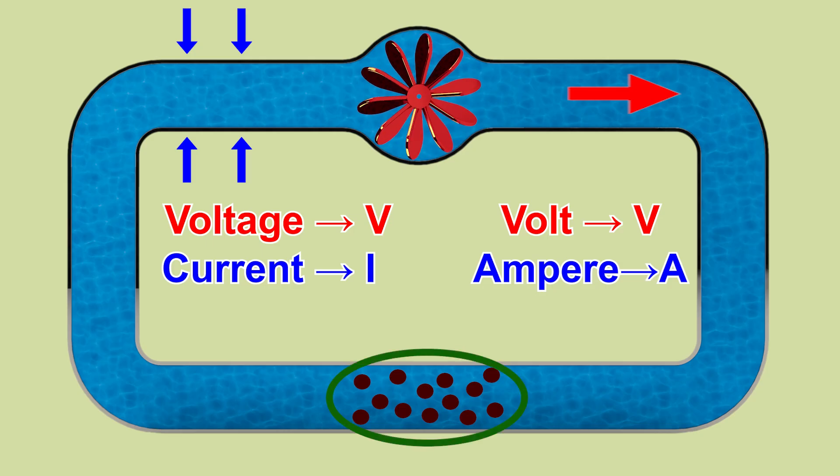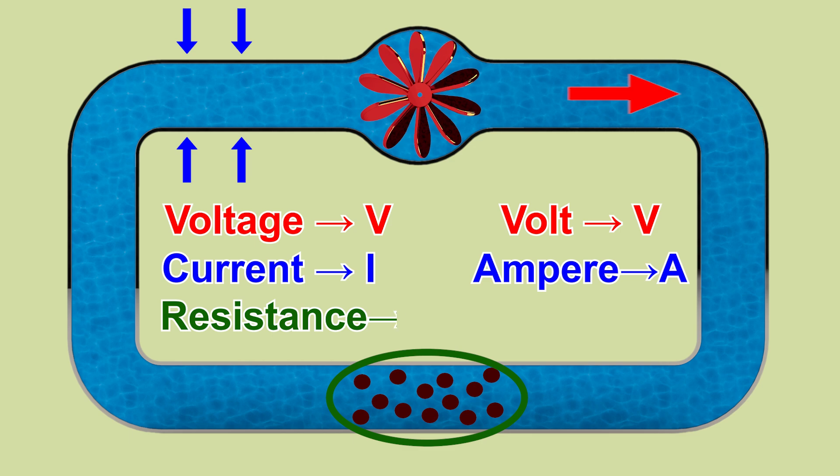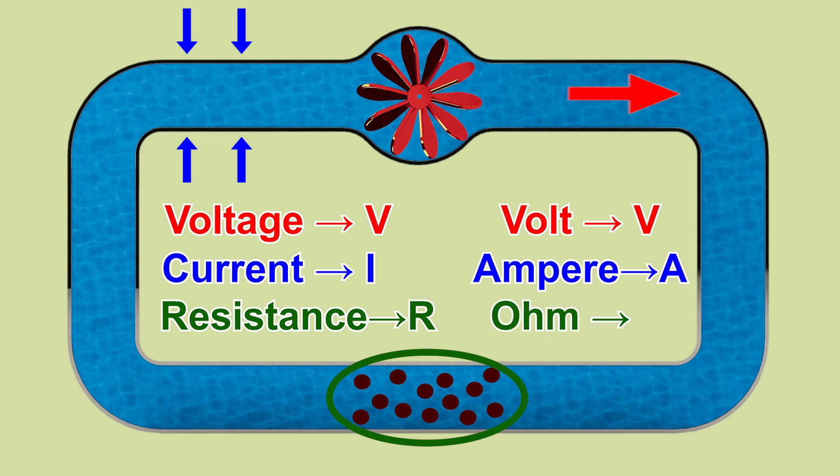And buildup or blockages? That's resistance. Resistance is shown with the letter R, and its unit is ohm, written with the symbol Ω.